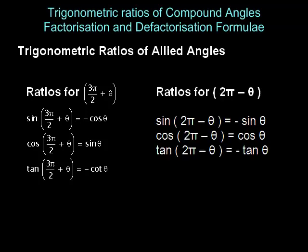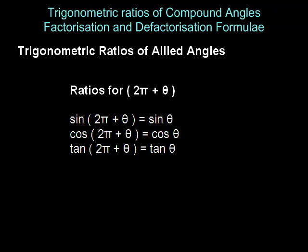Sine of 2 pi minus theta is minus sine theta, cos of 2 pi minus theta is cos theta, and tan of 2 pi minus theta is minus tan theta. Finally, sine of 2 pi plus theta is sine theta, cos of 2 pi plus theta is cos theta, and tan of 2 pi plus theta is tan theta.